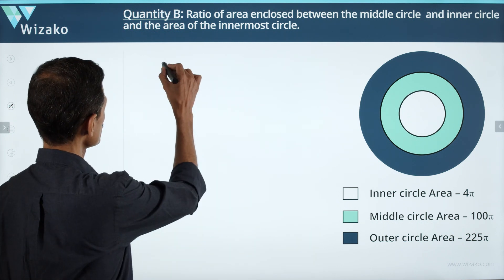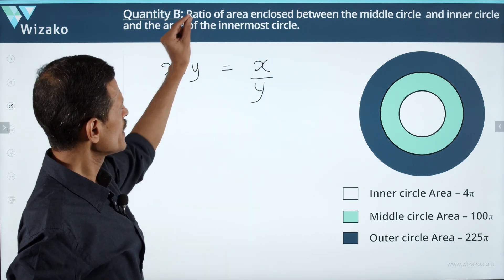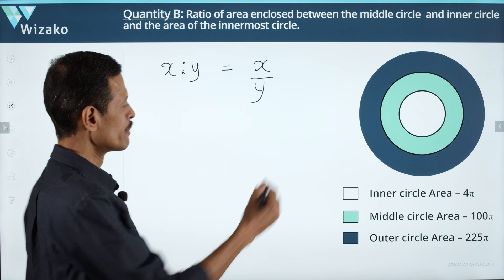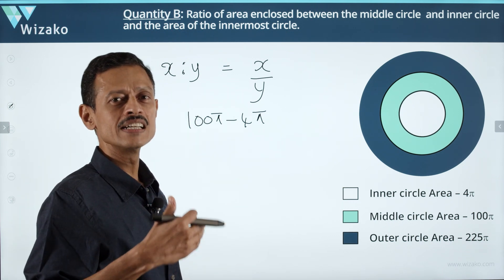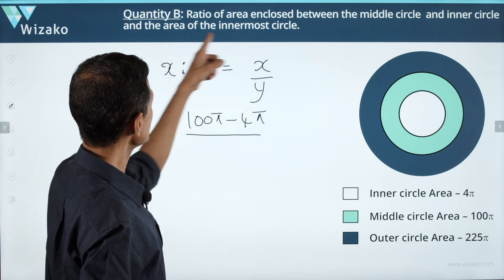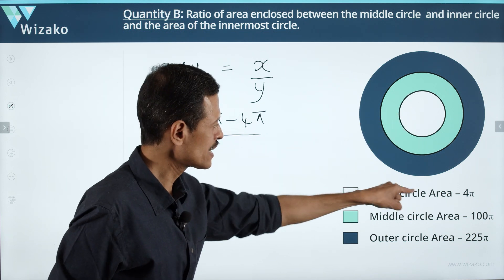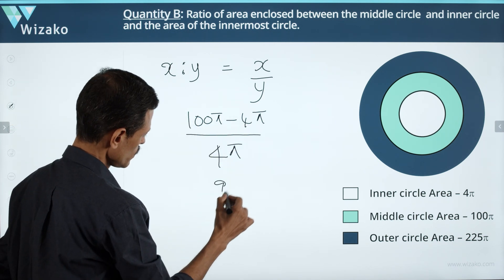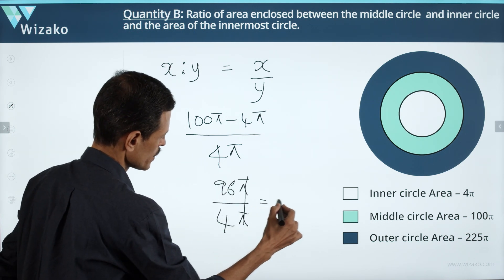Quantity B is the ratio of the area enclosed between the middle and inner circle to the area of the innermost circle. The numerator is 100π − 4π = 96π. The denominator is 4π. Pi cancels, giving 96 ÷ 4 = 24. So Quantity B = 24.